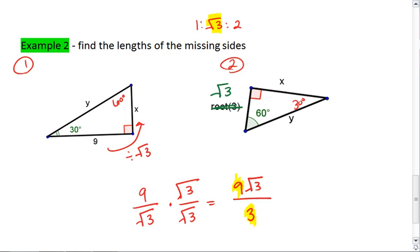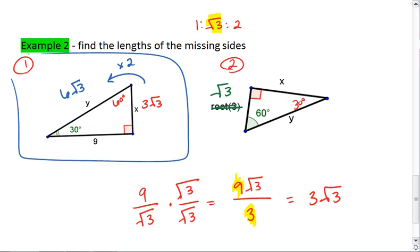Now your 9 and your 3 reduce, giving us 3 square root of 3. So here we have 3 square root of 3. Now to go from the shortest leg to the hypotenuse, we multiply by 2, and that gives us 6 times the square root of 3. That is your answer for the first triangle.